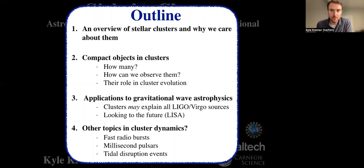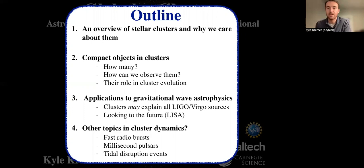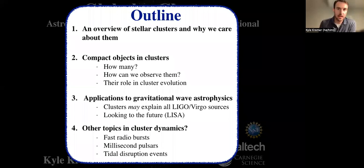There are many other topics, especially related to electromagnetic transient astronomy, that are relevant to this topic of compact objects in clusters. Just recently, this past year, there was a fast radio burst observed in a globular cluster in the nearby galaxy M81. Thinking about how compact object populations can explain fast radio bursts is an extremely relevant current field of study. Of course, there are many millisecond pulsars that have been observed in clusters for the past several decades, and other potential applications such as tidal disruption events of stars by stellar mass black holes.